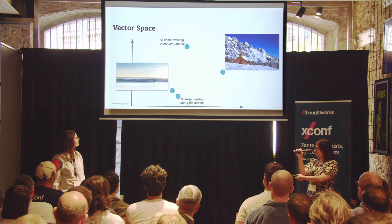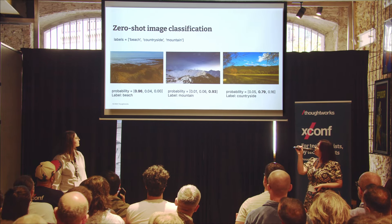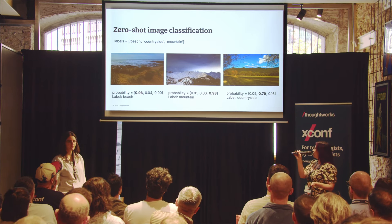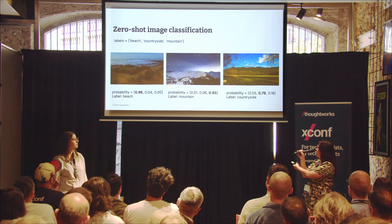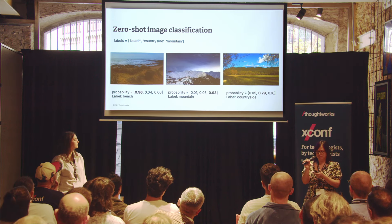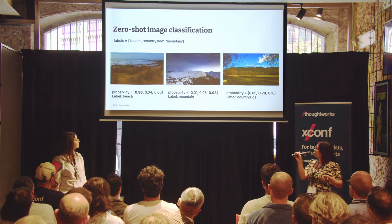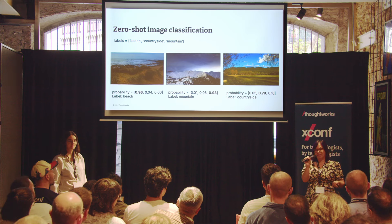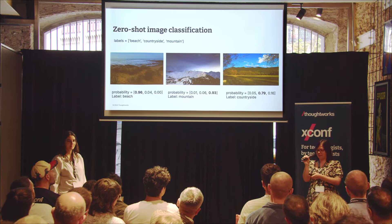A common use case for this model is zero-shot image classification. You give the model a list of labels, then give it all your images. It converts them both into vectors and based on the similarity between each label and the image, it produces a probability for that label. You can see a 96% probability that an image is a beach, and a 79% probability for a mountain. The zero-shot aspect comes from the fact that we haven't trained the model on this particular dataset — it's been trained on a vast amount of images and text from the internet.